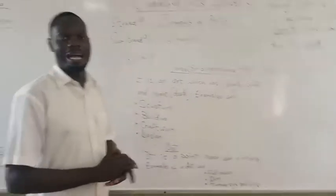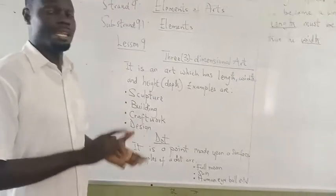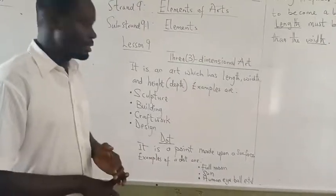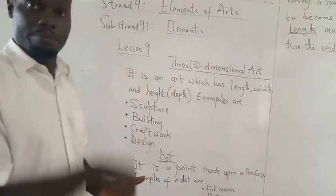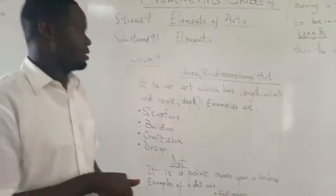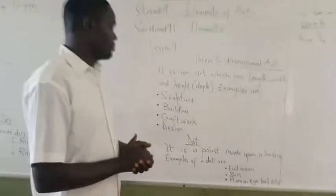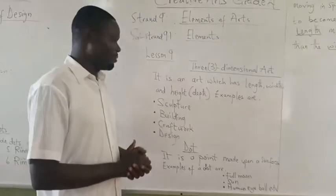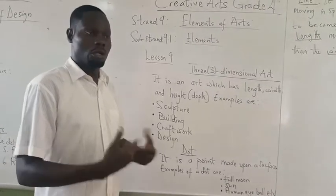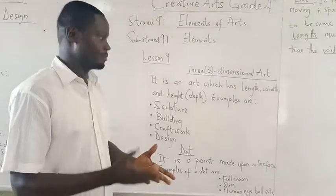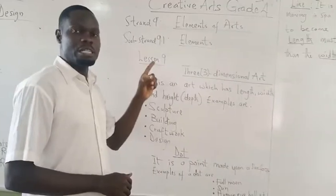The three dimensional arts. It is an art which has length, width and height, or we can say the depth — the deeper part of it. Examples are sculpture, building, craft work, and design as in clothing and drawing and stuff. So remember we are still dealing with elements of arts.